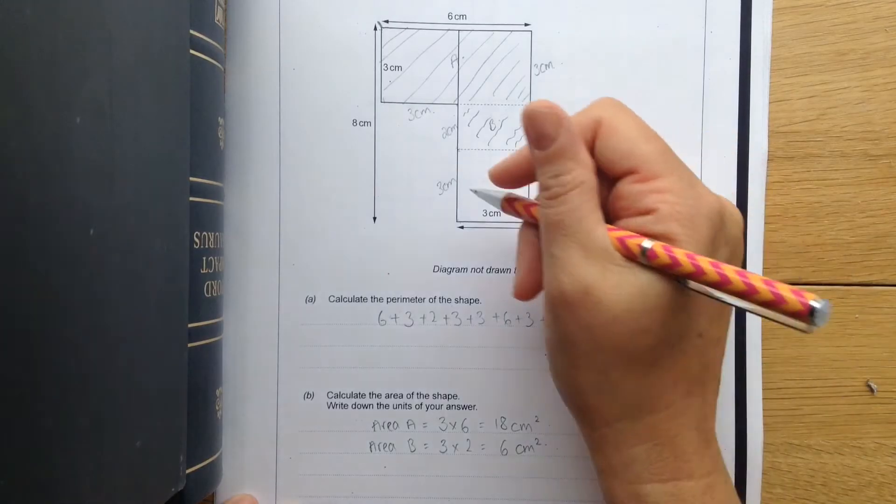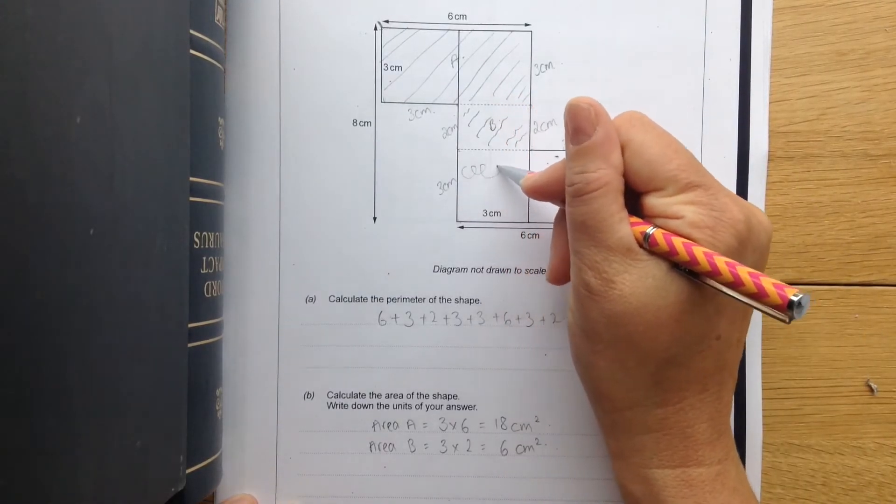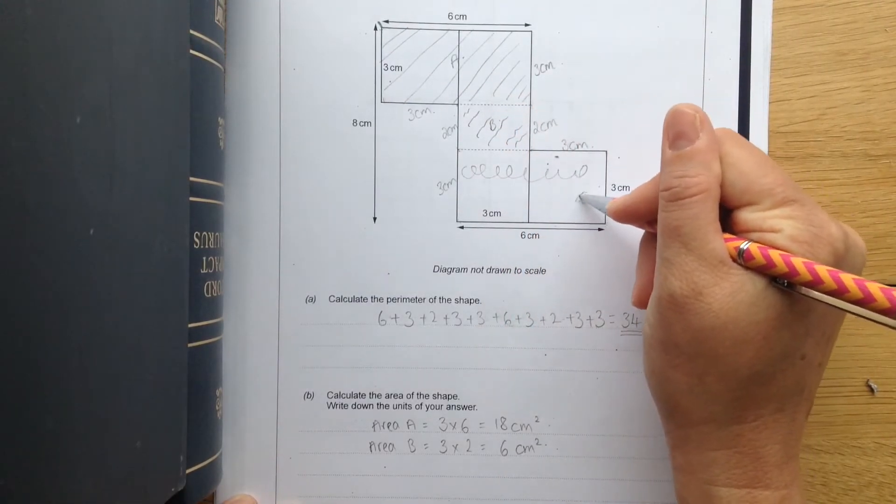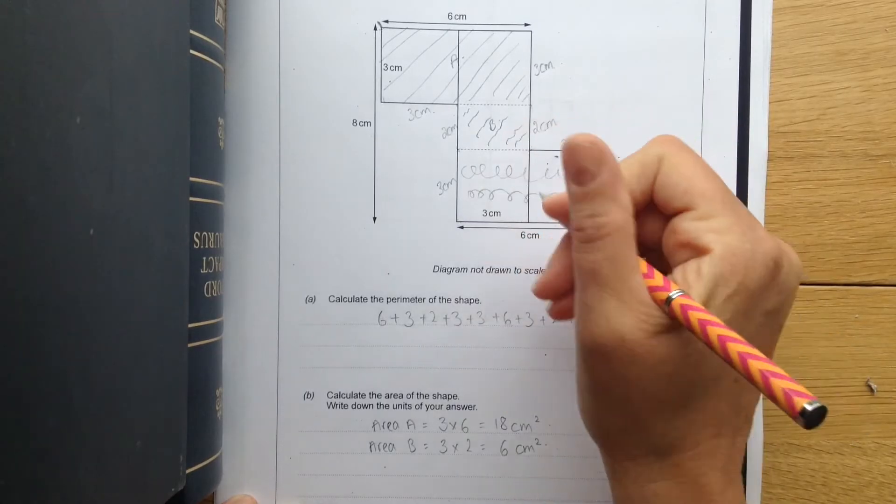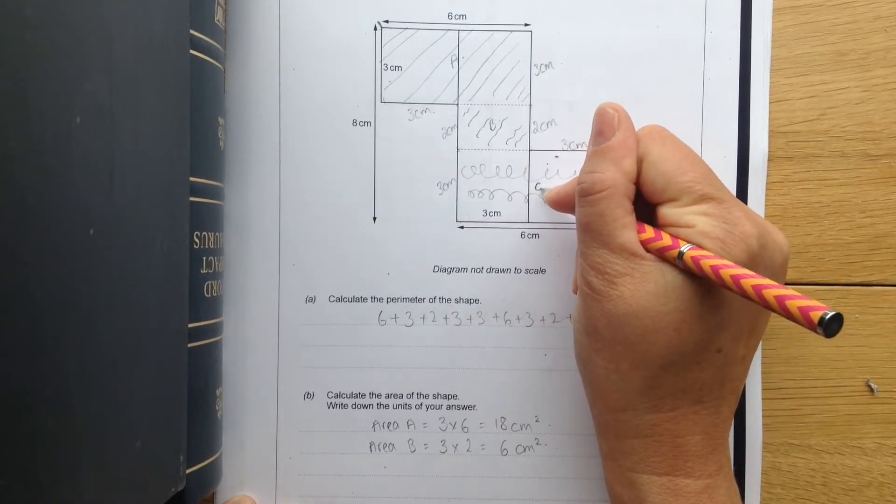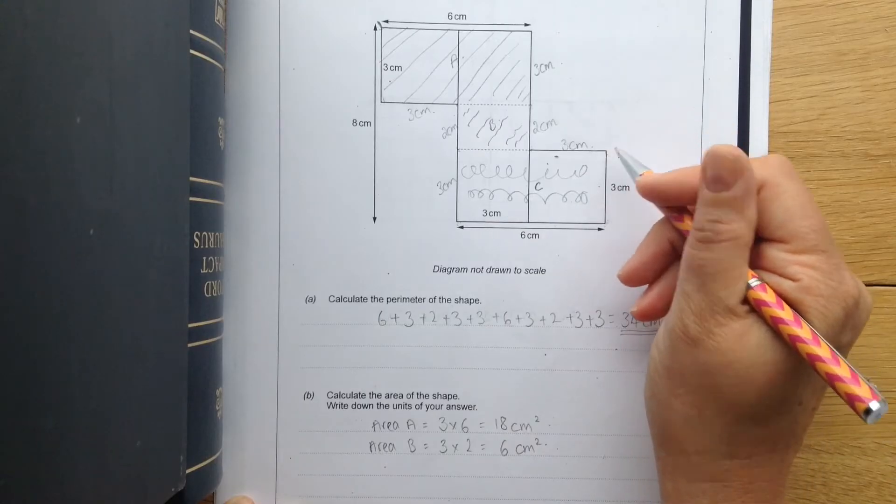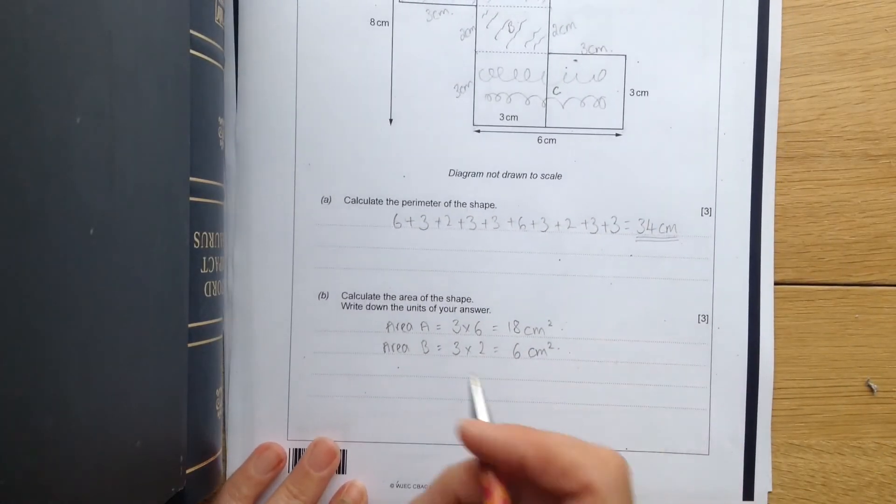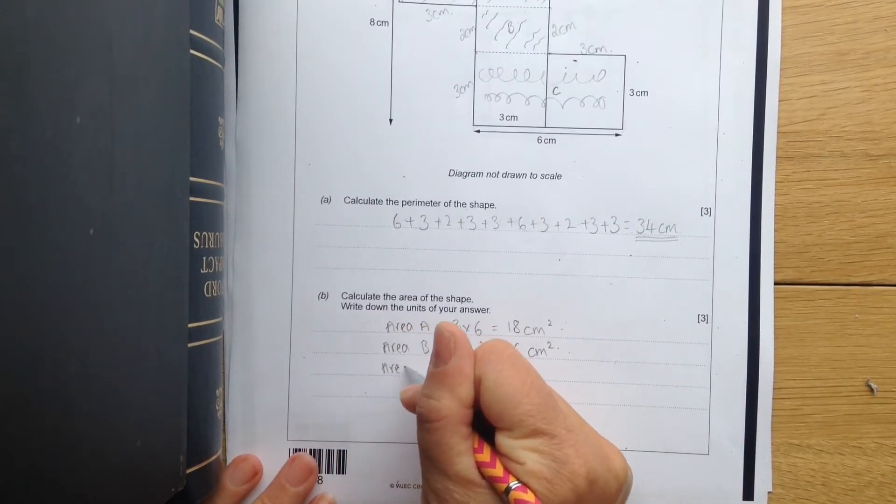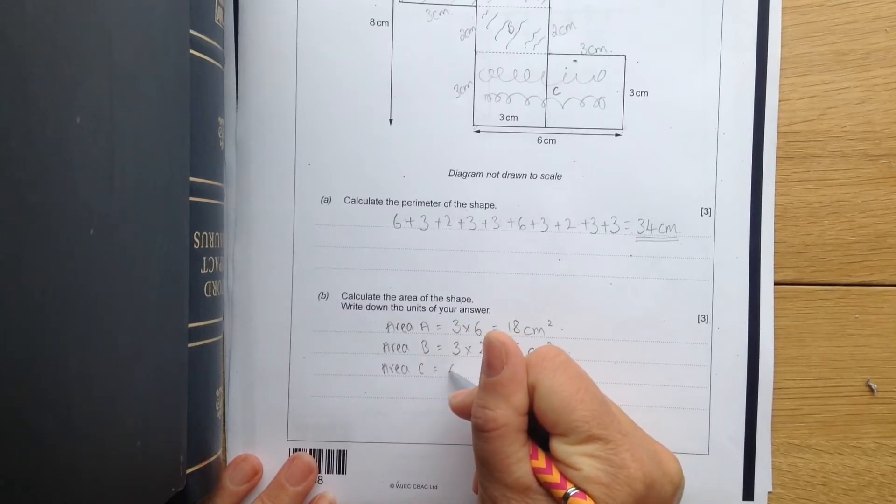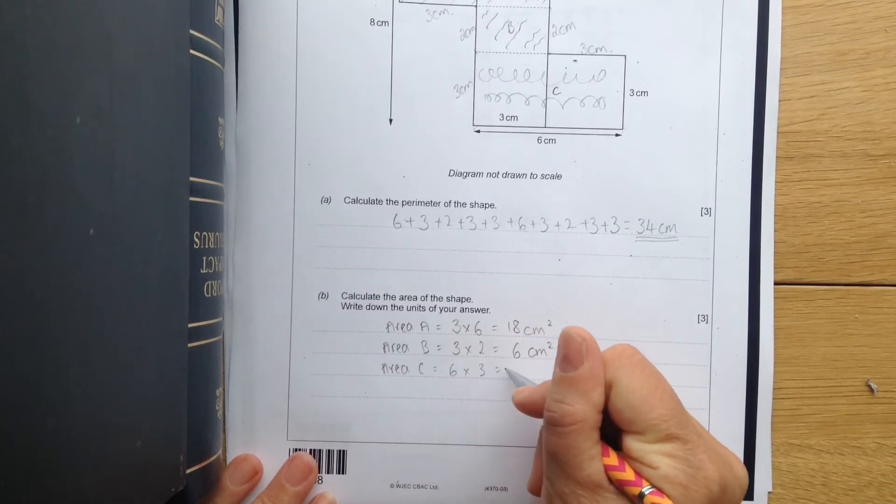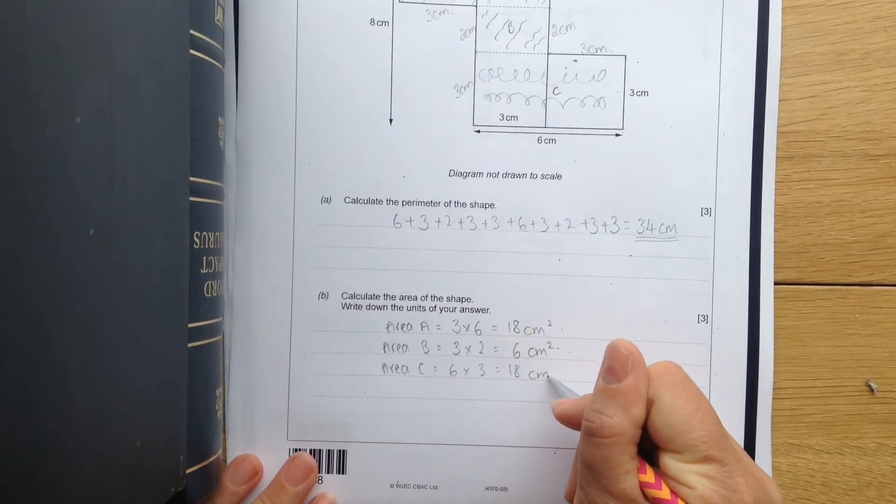Final piece here. So I'm going to make this one different again. So I know that it's a different shape I'm doing. This is going to be area C. And this is going to be 6 by 3. So area C equals 6 times 3, which is also 18 centimeters squared.